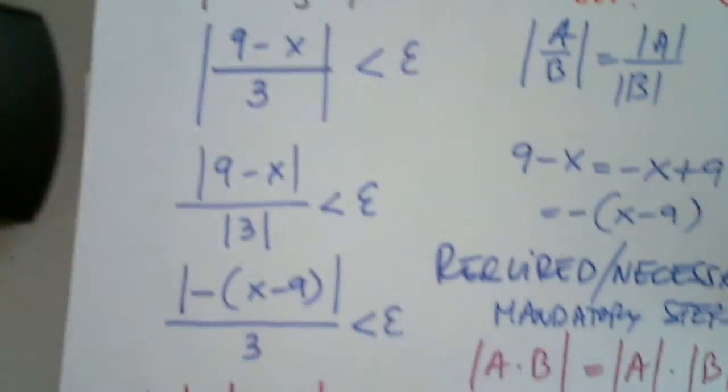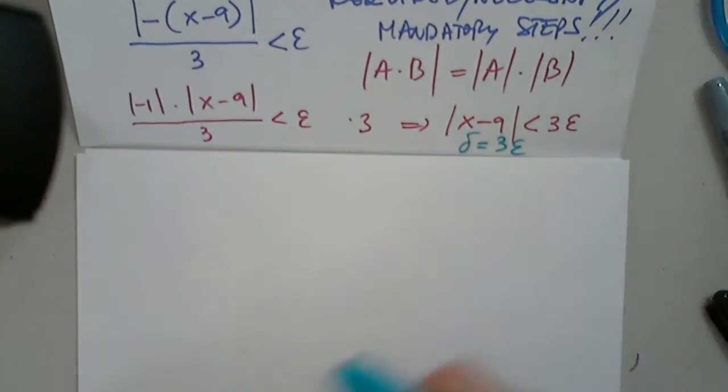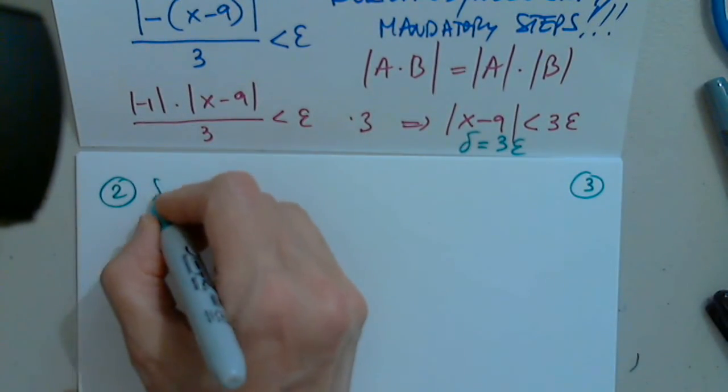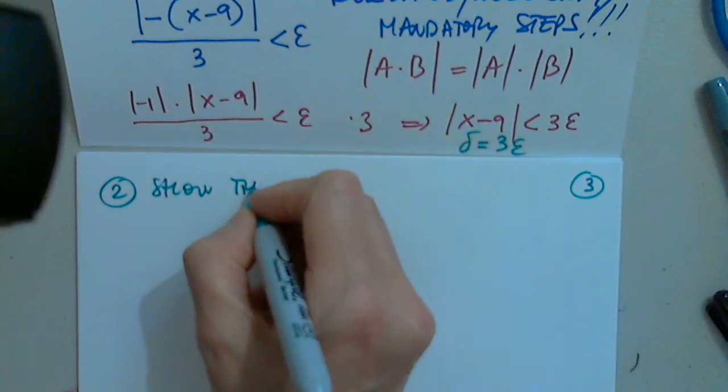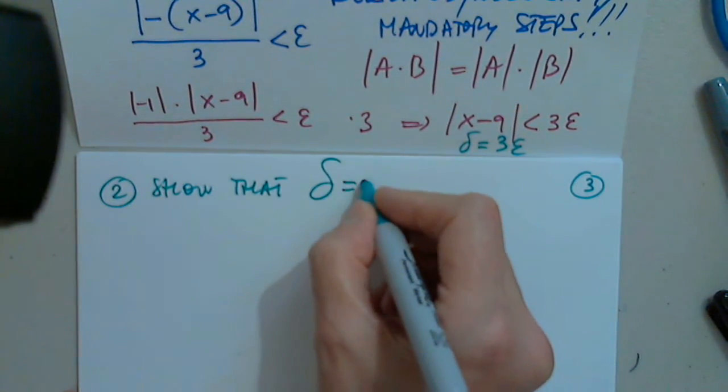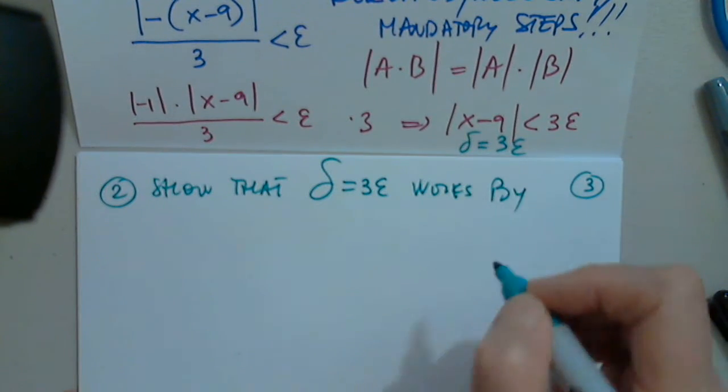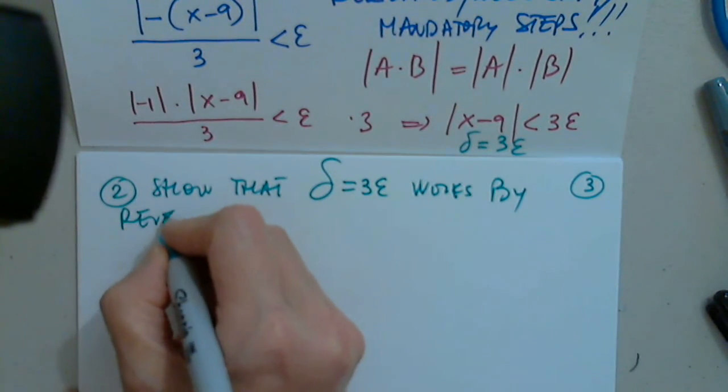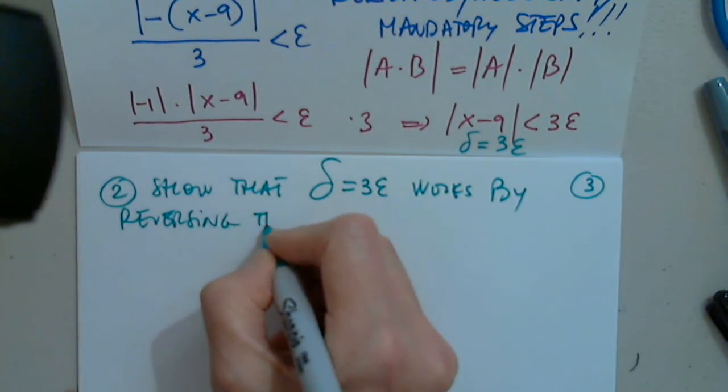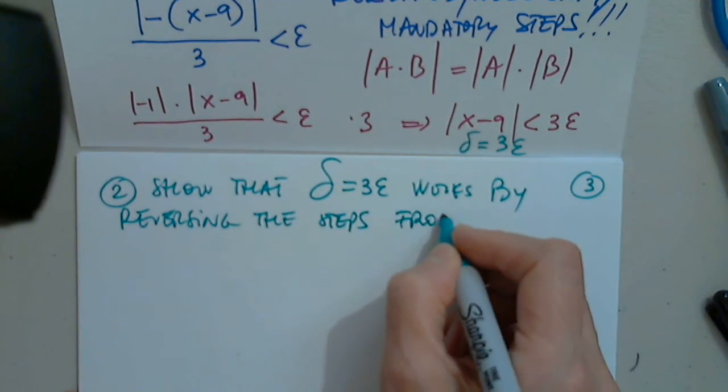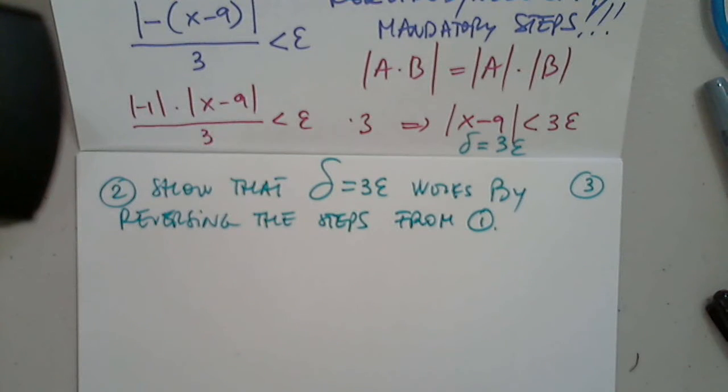But I will waive you of step two if you just write this: step two, show that delta equals three epsilon works by reversing the steps from above, from one. That's it. You do not have to actually do anything.